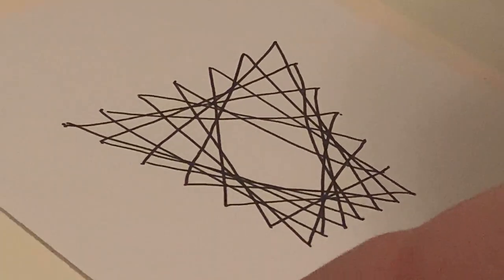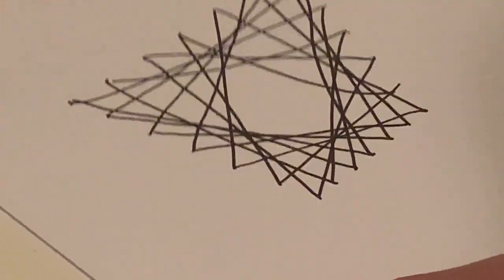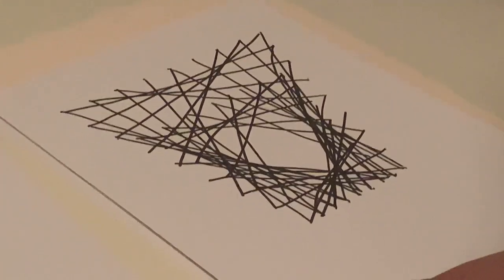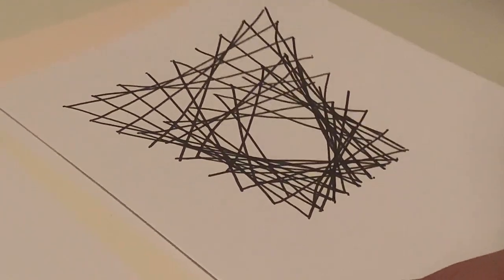And here is the rhombus. Oh, the trapezoid. And here we have an n seven and n five inside each other.